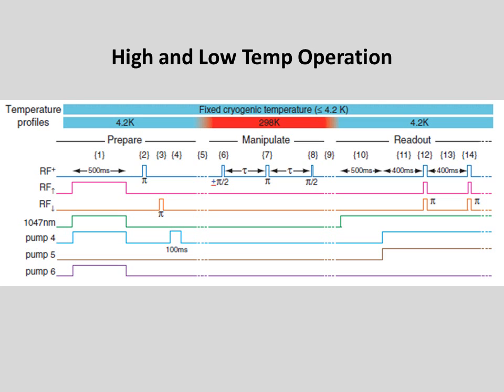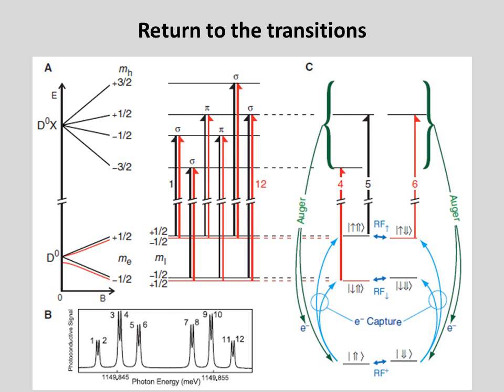So, remember those transitions from the prior slide? What's happening here is that the neutral donor is optically excited in step 4 to the donor-bound exciton, which decays through the Auger process to create ionized phosphorus in the same nuclear spin state. This happens fairly quickly. The ionized phosphorus returns to the neutral phosphorus directly at step 9. So this is a multiple-state process, not just going back and forth between a neutral atom and an ionized atom.